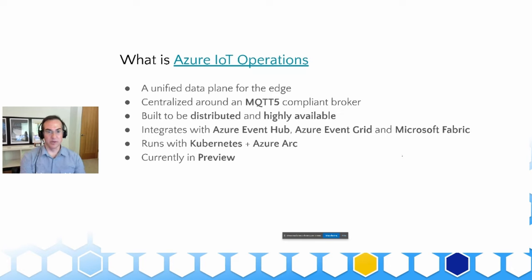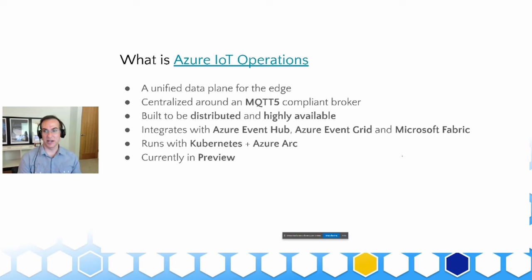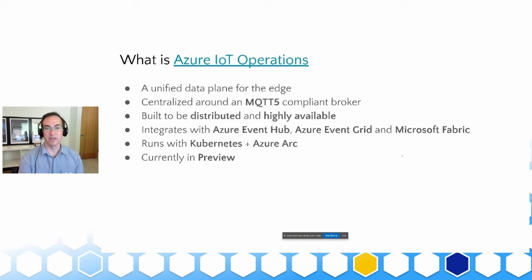At the moment we're still in preview, but we're integrating with quite a few upstream Azure services such as Event Hub, Event Grid, and Fabric. It runs on Kubernetes and leverages Azure Arc — a service that basically lets you control your own resources via the Azure cloud. In this case, we're using a Kubernetes deployment on the local machine, and Arc surfaces that deployment as a resource in Azure so we can leverage that tunnel to deploy our additional pieces.